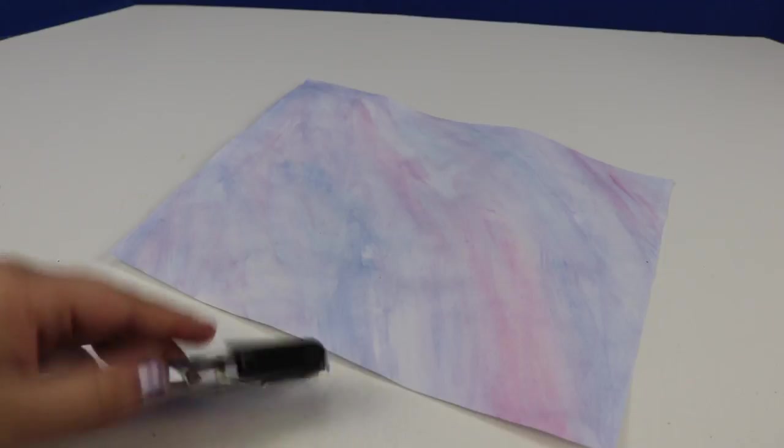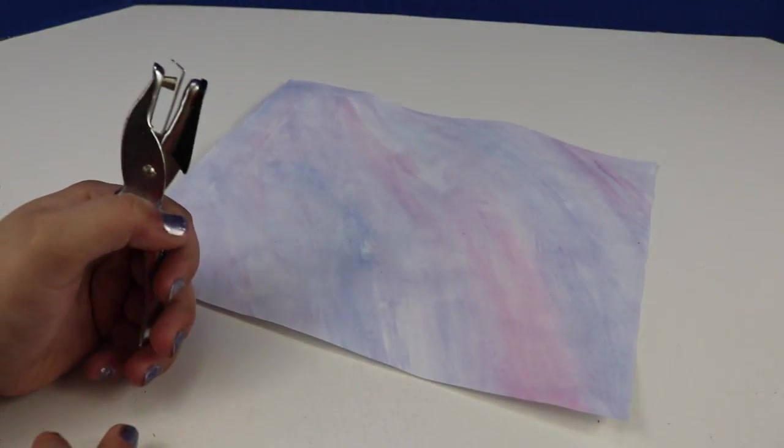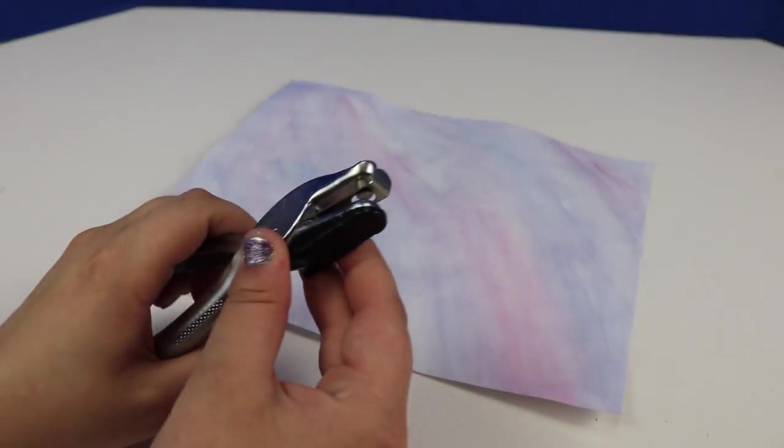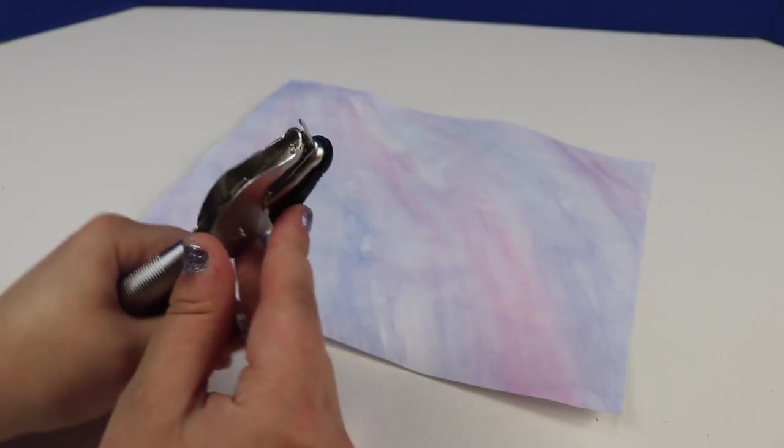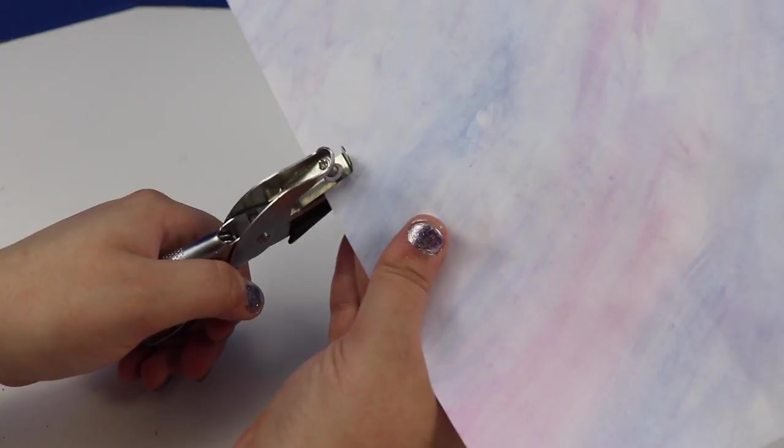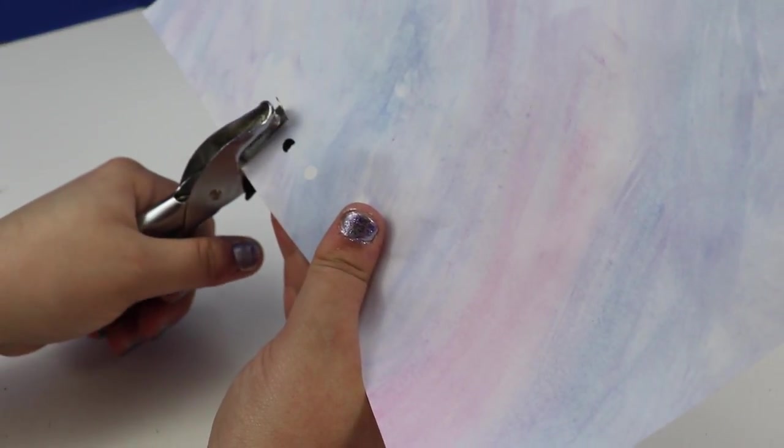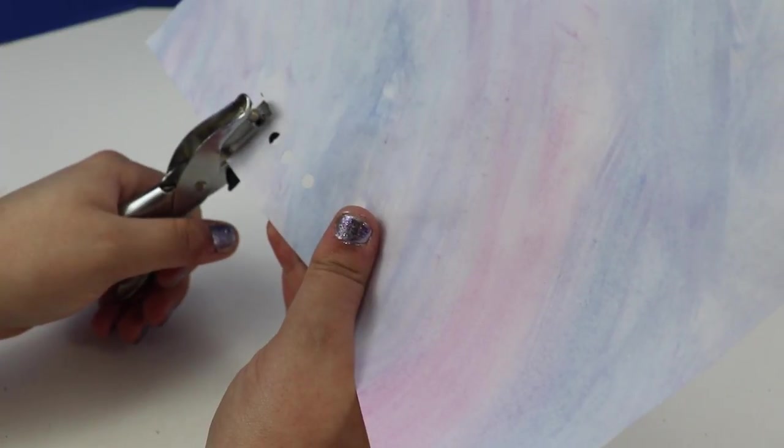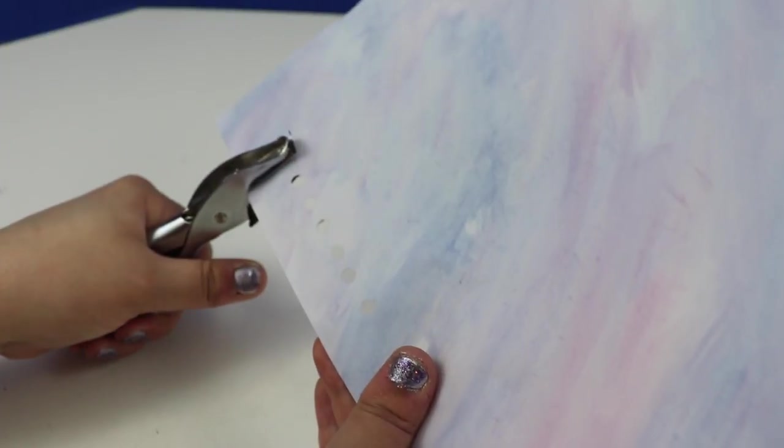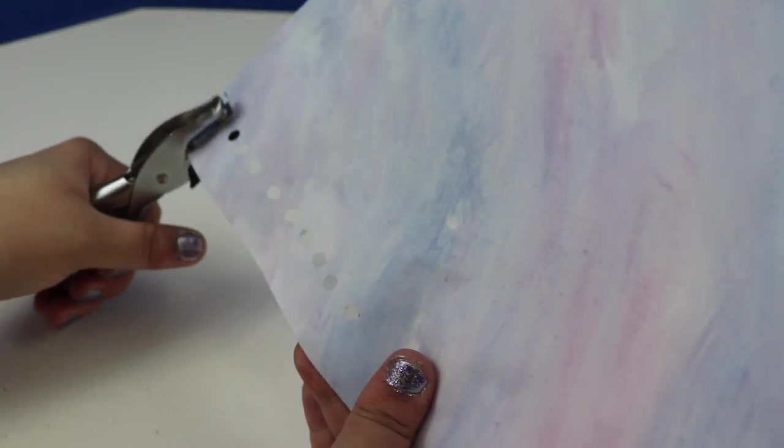The next step that you're going to take is you're going to punch out little holes out of this paper here, the painted paper that we just had that's dry. And make sure that you also get an adult's permission for this too because these can be dangerous as well. I think the easiest way to do this is to go around the edges like this. So push it all the way on there as far as it'll go. And then to just go around the edges.